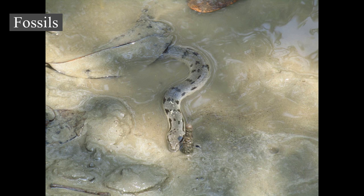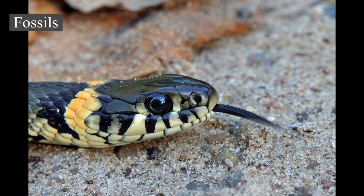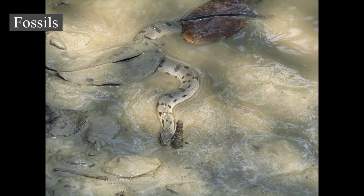According to this hypothesis, features such as the transparent fused eyelids and loss of external ears evolved to cope with fossorial difficulties, such as scratched corneas and dirt in the ears. Some primitive snakes are known to have possessed hind limbs, but their pelvic bones lacked a direct connection to the vertebrae. These include fossil species like Haasiophis, Pachyrhachis, and Eupodophis, which are slightly older than Najash.